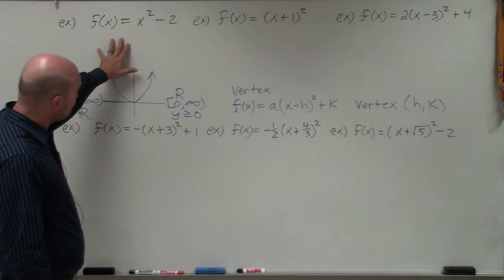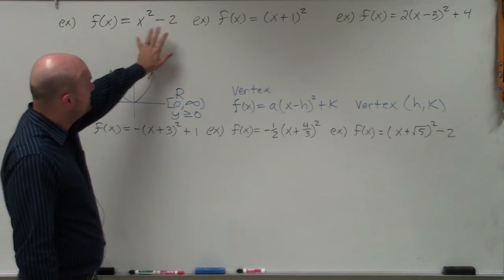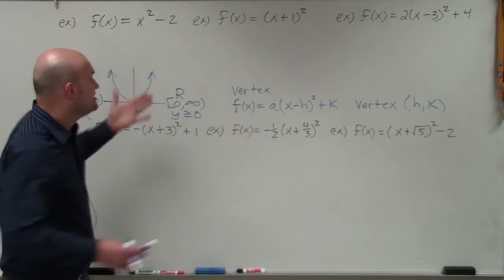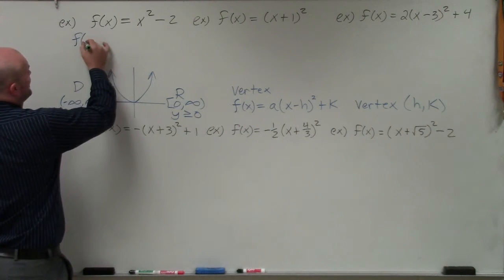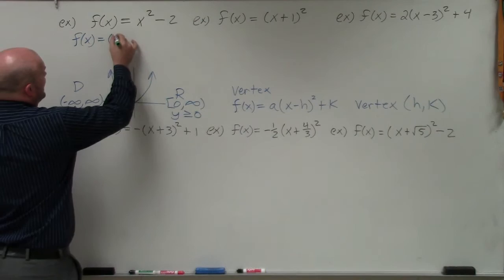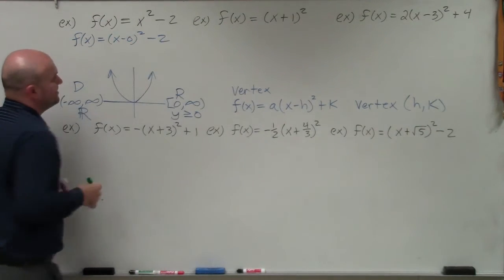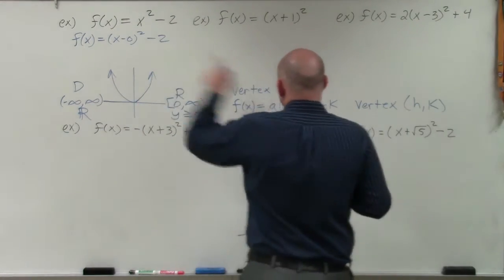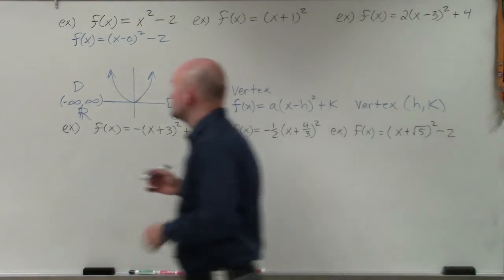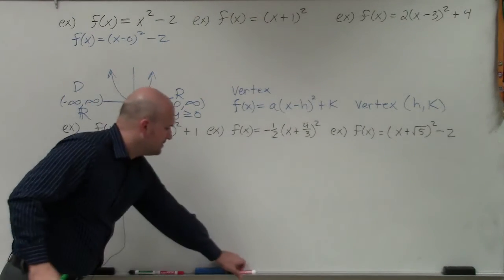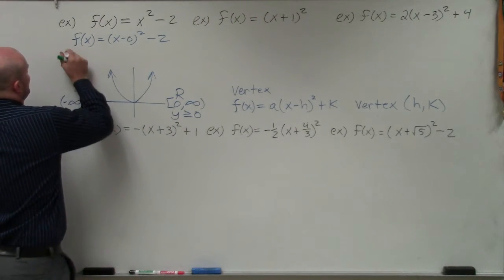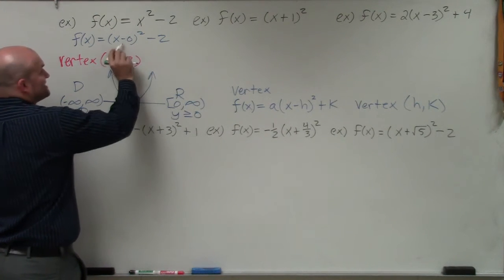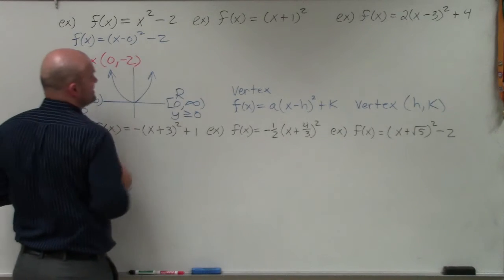On this first example, a lot of times students get mixed up because it's not obviously in vertex form. You can basically rewrite it as f of x equals x minus 0 squared minus 2 — that's the exact same thing, since x minus 0 is just x. So we do know the value of h: h is 0. The vertex in this case is going to be 0, negative 2, as h equals 0 and k equals negative 2.